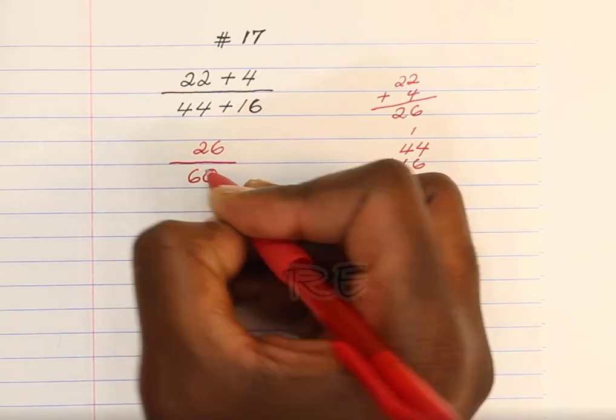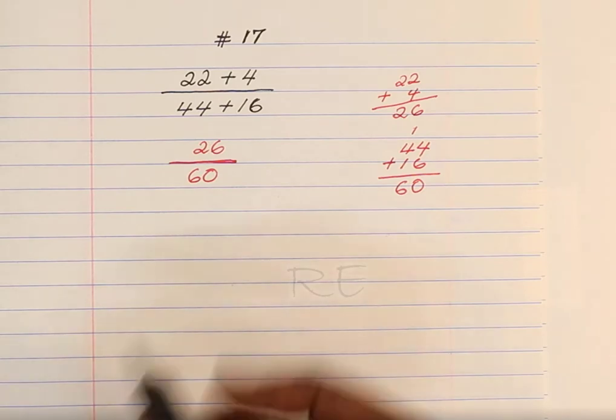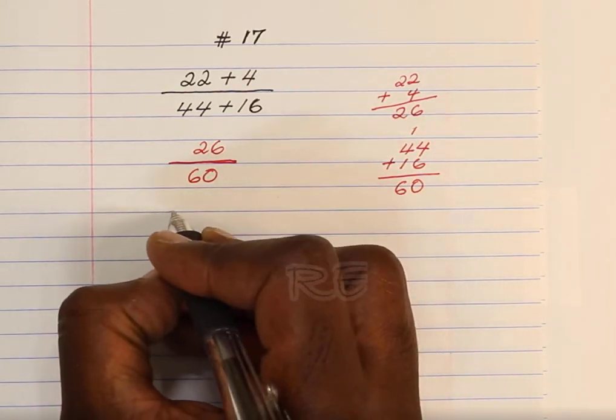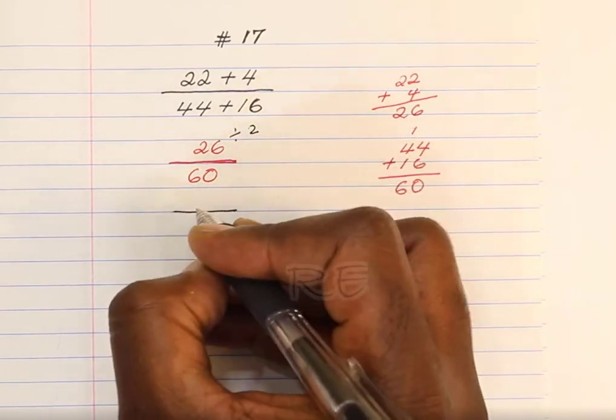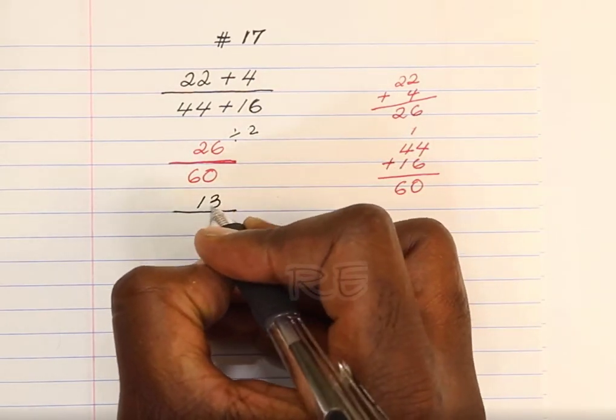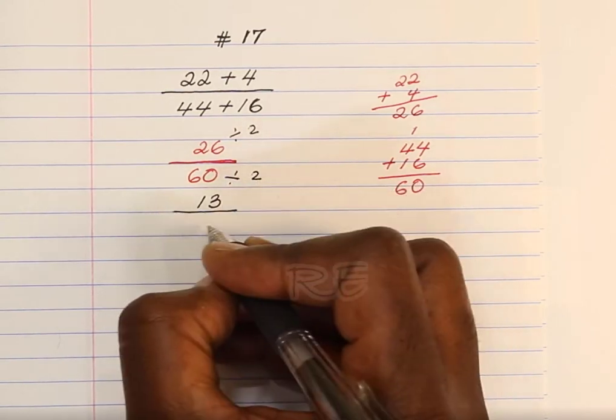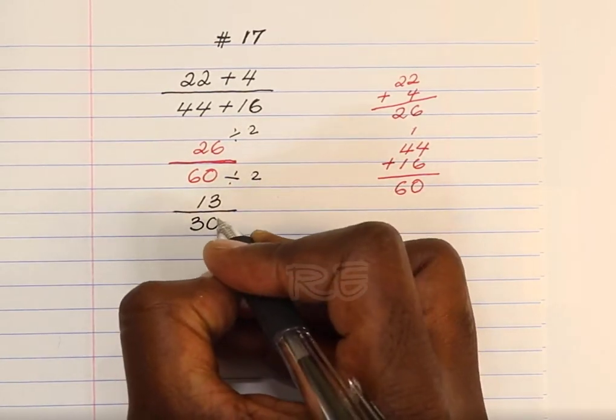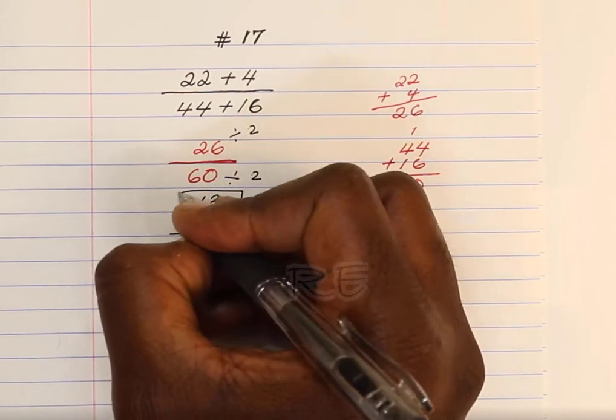So we get 26 over 60, which must be reduced. Both of them are even, so we're going to divide both of them by 2. 26 divided by 2 is 13, and 60 divided by 2 is 30. That's it.